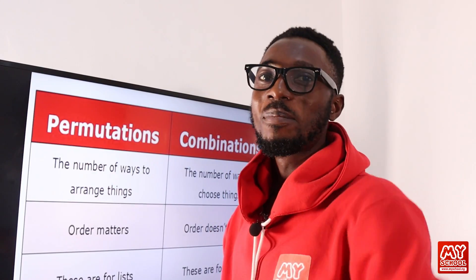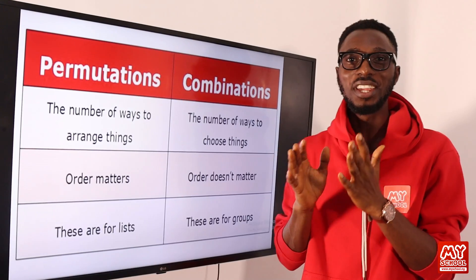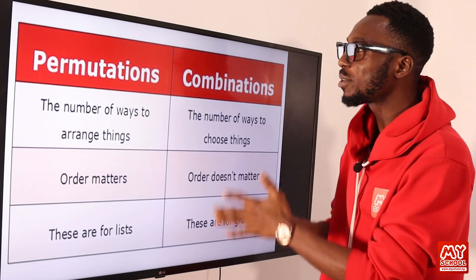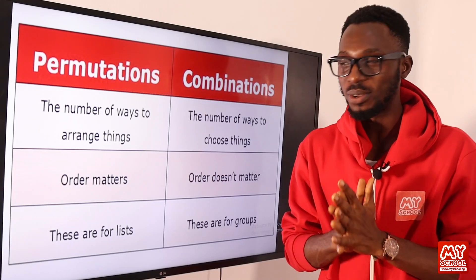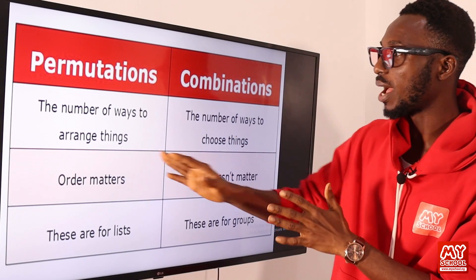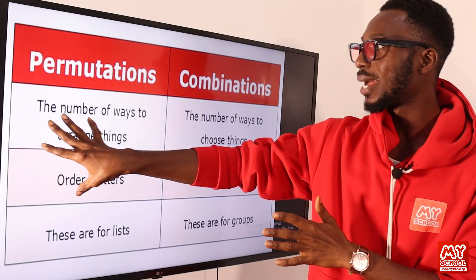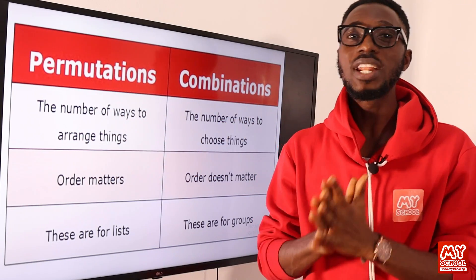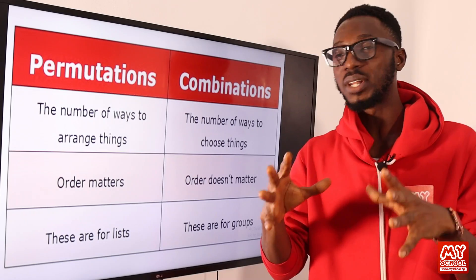Welcome back to MySchool. We are still working under statistics, and we have permutations and combinations. Let's look at some comparisons. Permutation is regarded as the number of ways to arrange things — so when it comes to arrangements, when it comes to order, we are looking at permutation.